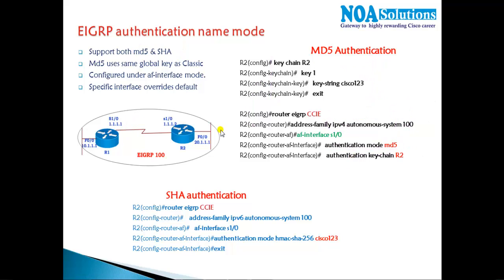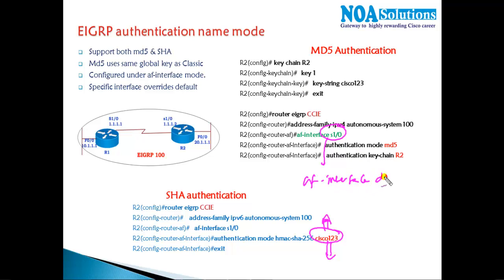For SHA authentication, we don't create any keychain. We directly apply the key number, and based on that key number it generates the algorithm. If it matches, authentication is successful. For MD5, we can define authentication on a specific interface, or if we want to enable authentication on all interfaces, we can use 'af interface default' and apply the commands there. Whatever configurations are done on the default interface mode will override specific interface configurations.